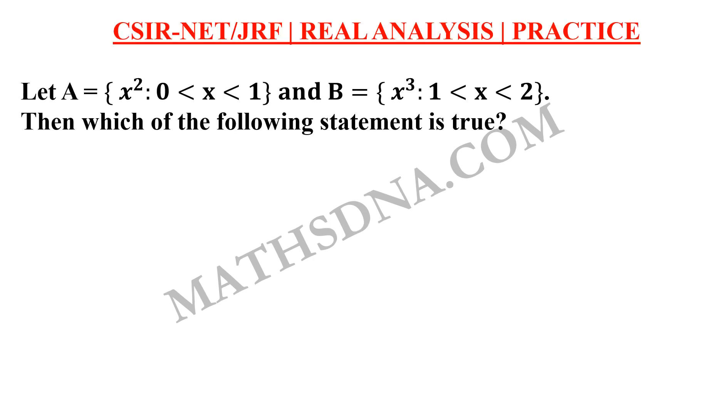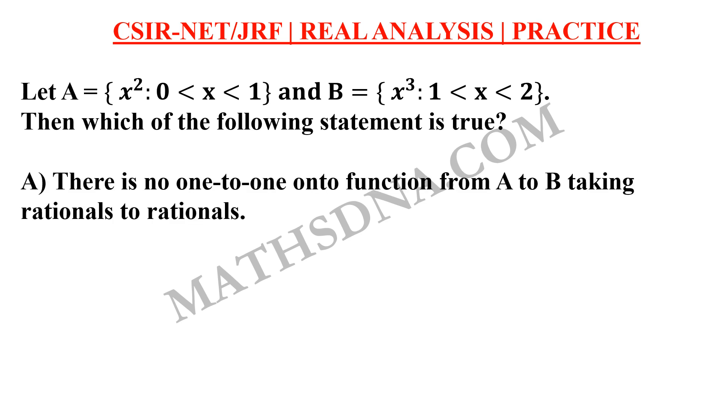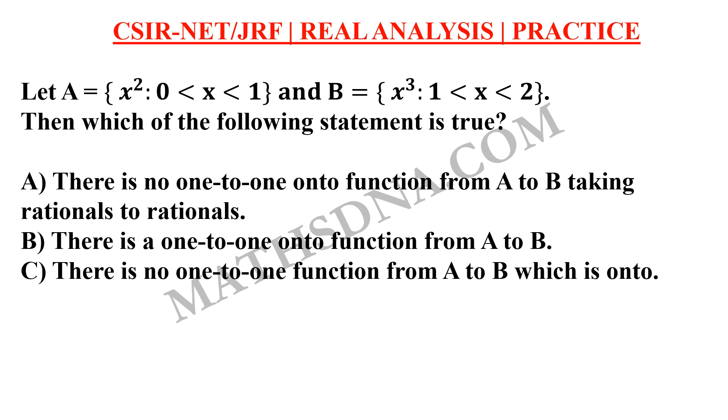Let A equals {x²: 0 < x < 1}, that is x is between zero and one, and B equals {x³: 1 < x < 2}, where x is between one and two. Then which of the following statement is true? The options are: A) there is no one-to-one onto function from A to B taking rationals to rationals, B) there is a one-to-one onto function from A to B, C) there is no one-to-one function from A to B which is onto, and D) there is no onto function from A to B which is one-to-one.